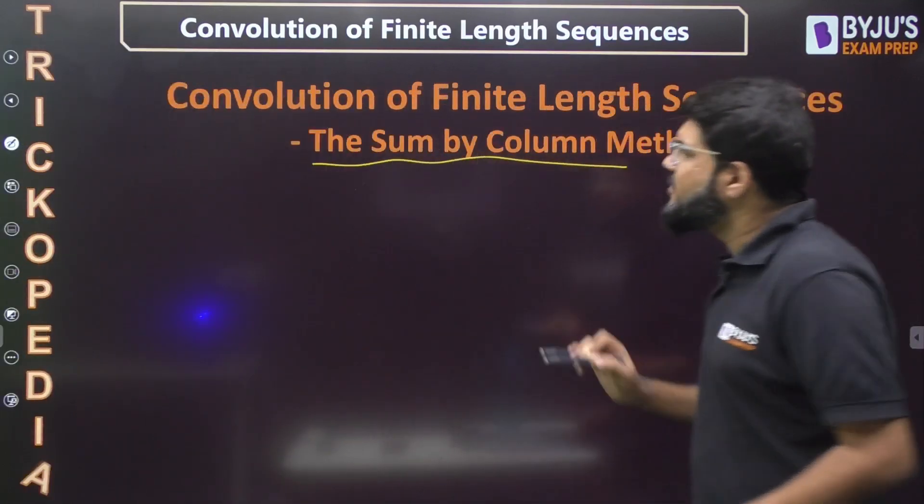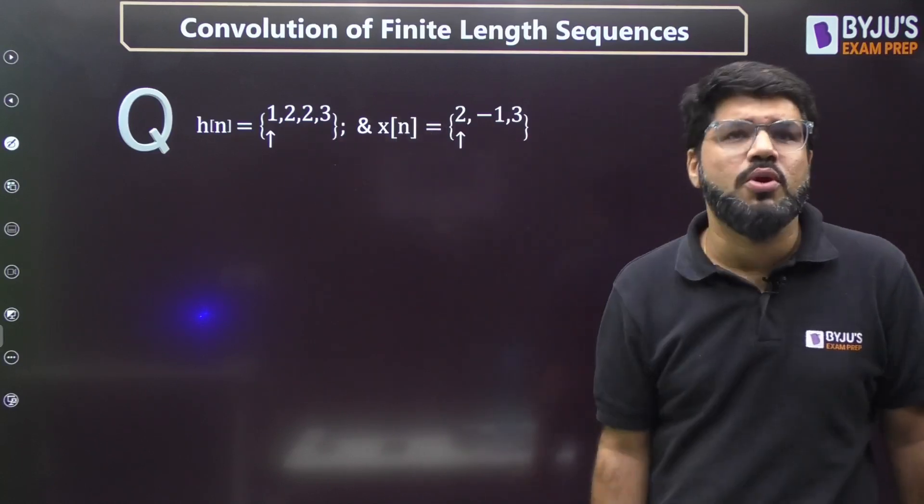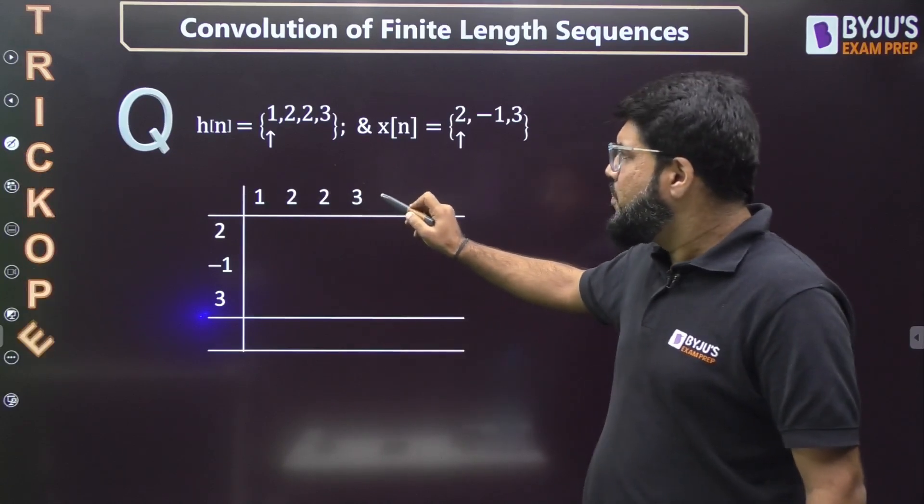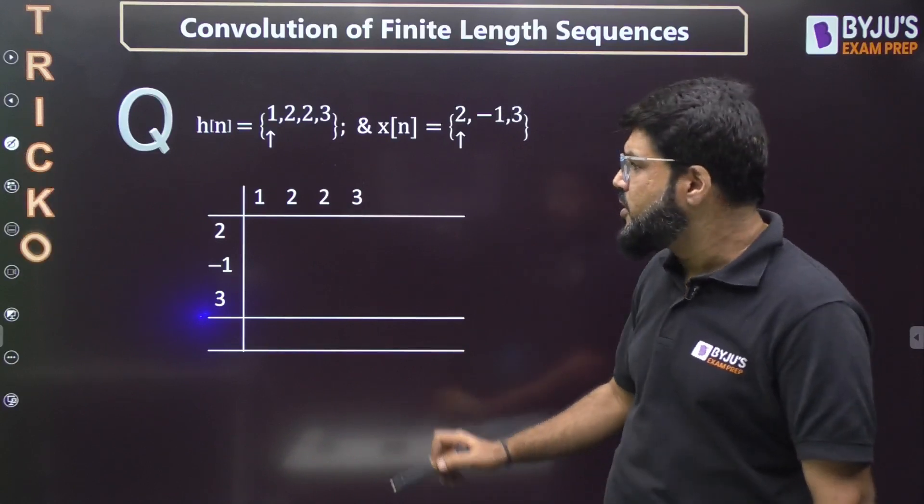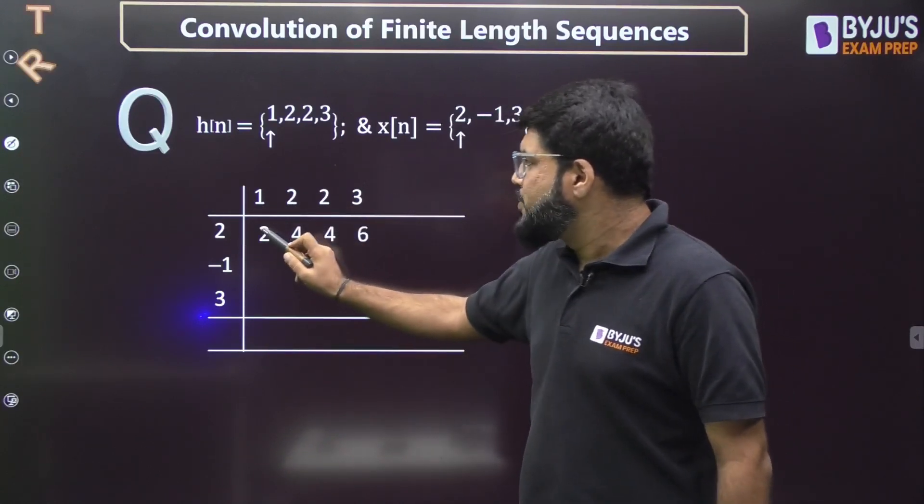Here we have the sum by column method and two signals are given, h[n] and x[n]. What is the first step? Write down any one of the signal on the top and another one, 2, -1, 3, across this vertical. You can swap it also because convolution is commutative.